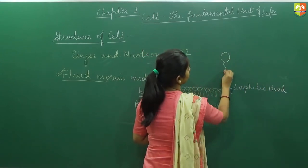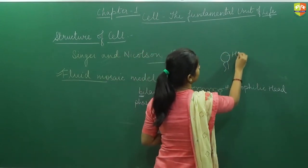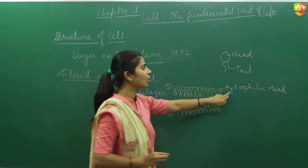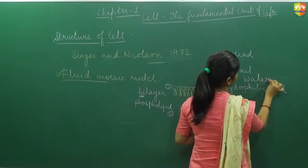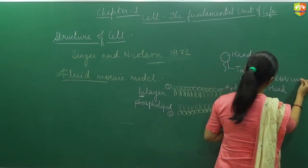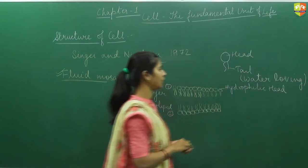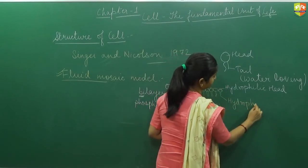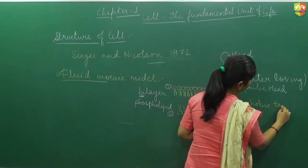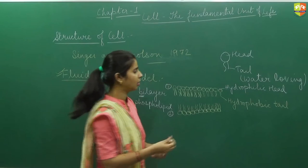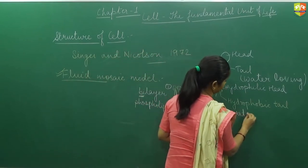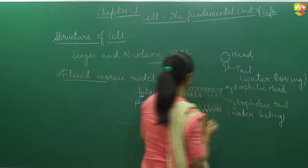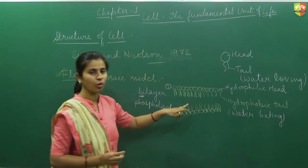The head of the lipid is hydrophilic, meaning it is water loving — you can write this as the nature of the hydrophilic head. The tail-like structure is hydrophobic, meaning water hating. So the nature of the head is hydrophilic and the nature of the tail is hydrophobic. This forms the lipid bilayer.